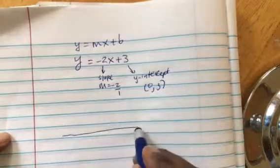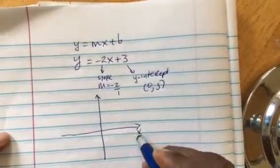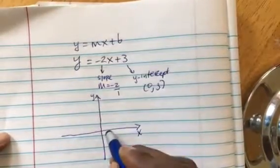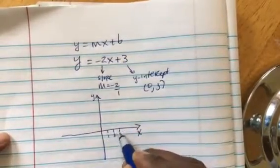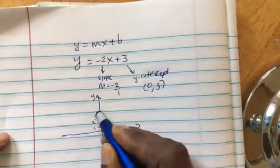So you draw your xy plane, right, and you label it: 1, 2, 3, 1, 2, 3, 4, negative 1, negative 2, and so forth.